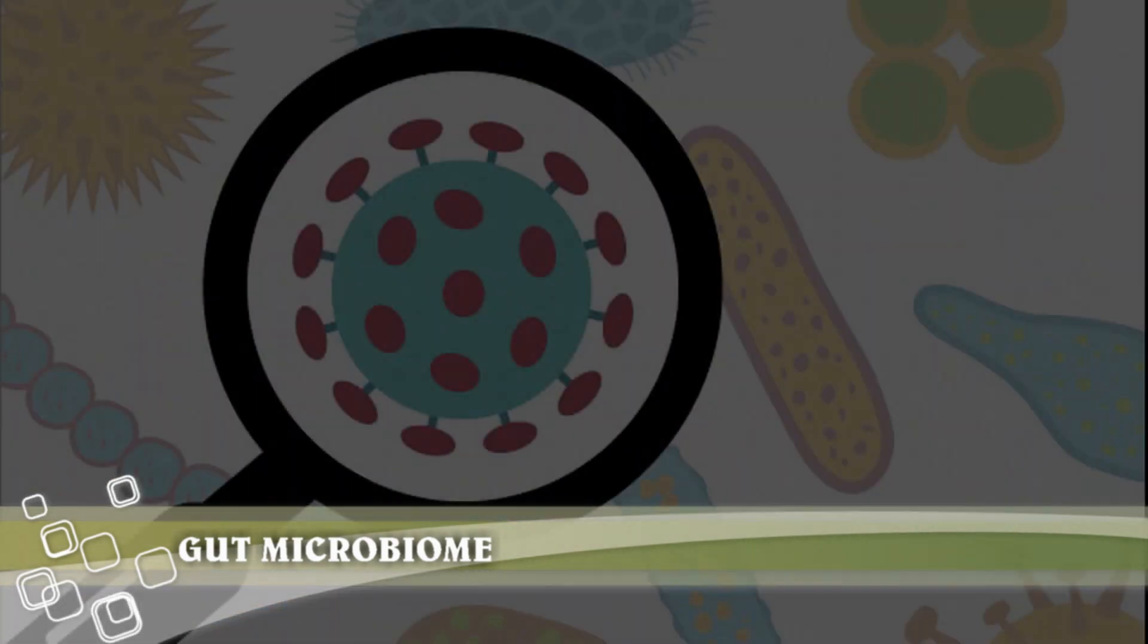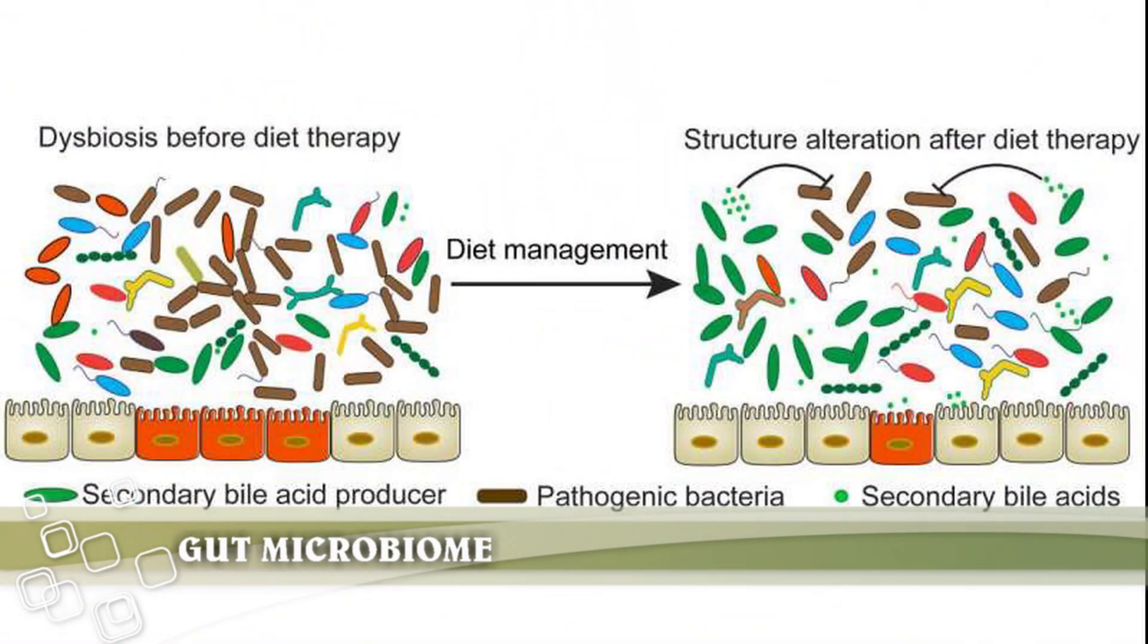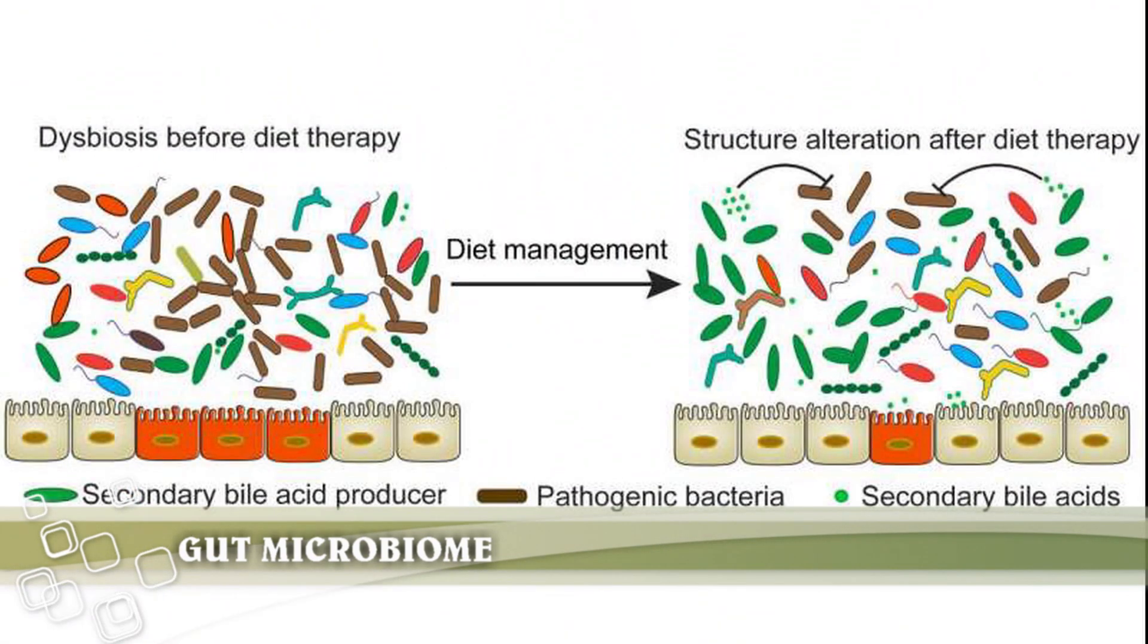Eat foods rich in polyphenols. Polyphenols are plant compounds found in red wine, green tea, dark chocolate, olive oil, and whole grains. They are broken down by the microbiome to stimulate healthy bacterial growth.